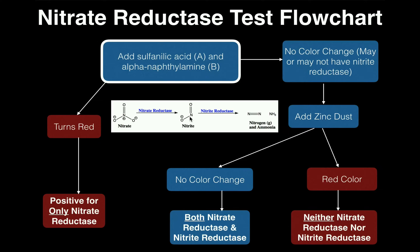We have a second reaction catalyzed by a second enzyme: nitrite reductase. Notice the I here instead of the A we saw in the first enzyme. Nitrite reductase converts NO2⁻ nitrite into a couple of products — ammonia (NH3) and nitrogen gas (N2), also called diatomic nitrogen. You can just refer to them as nitrogen and ammonia.